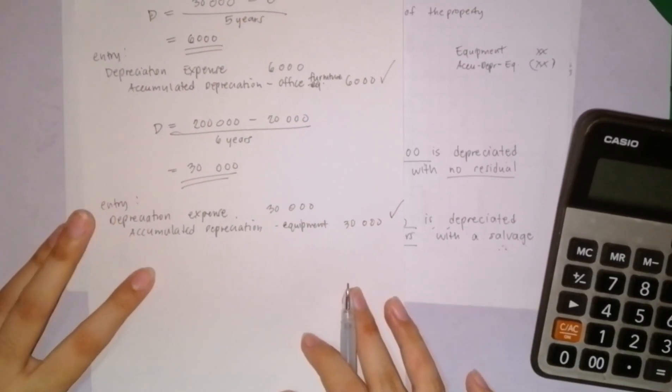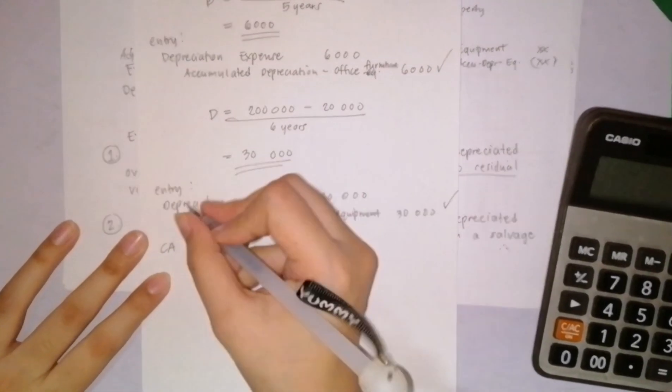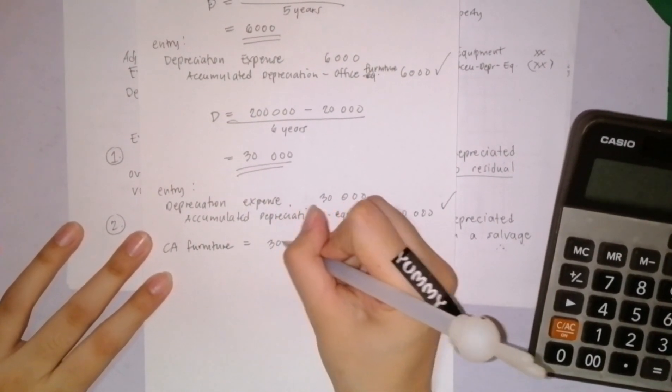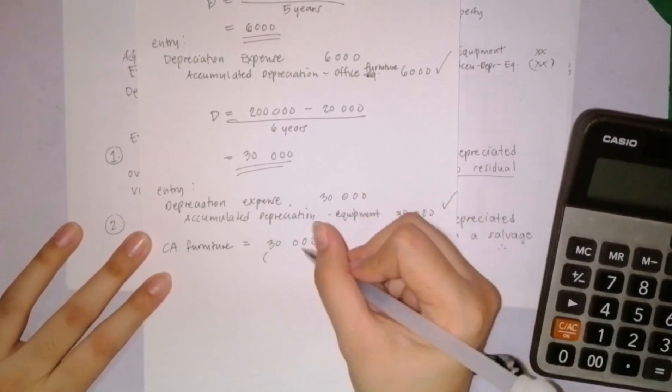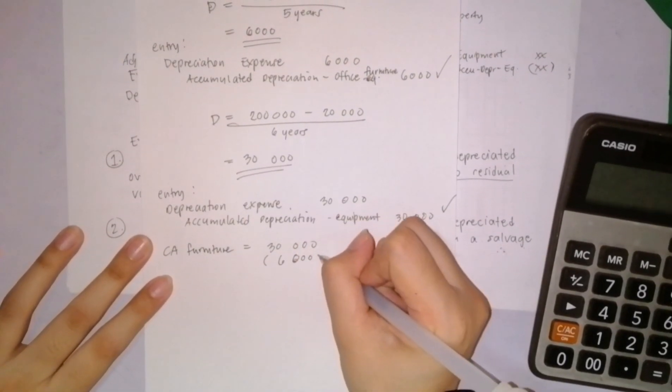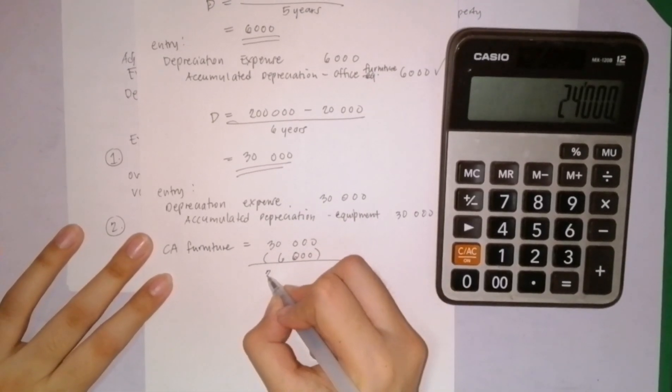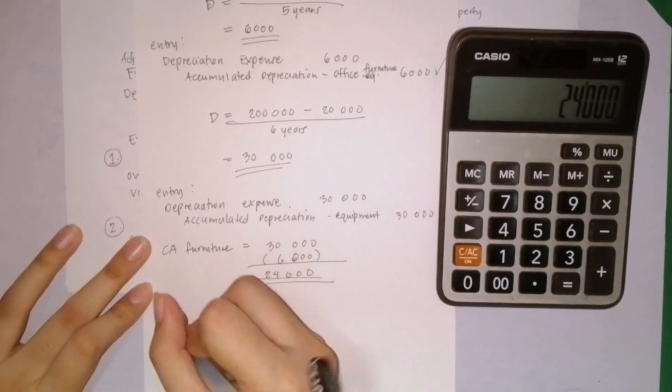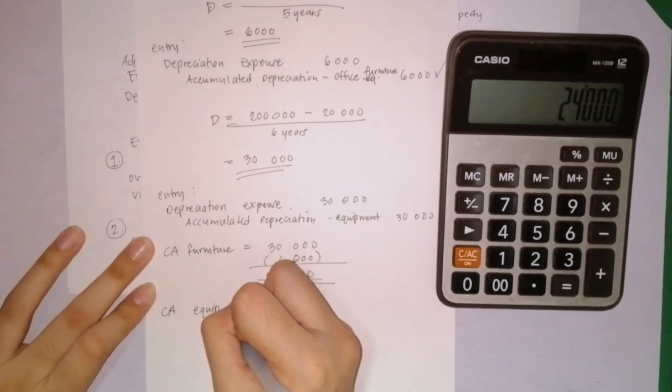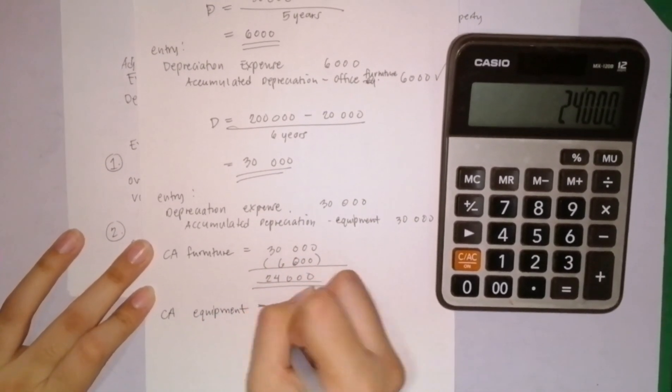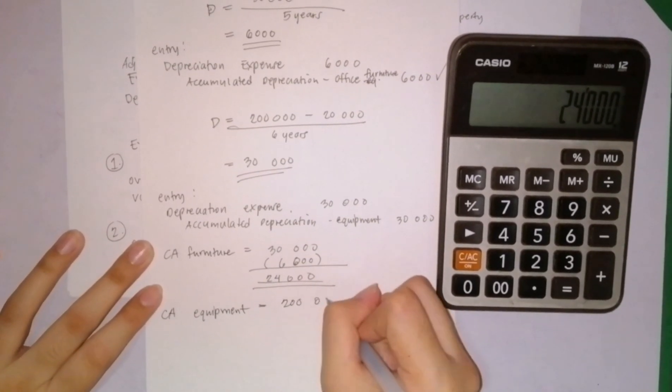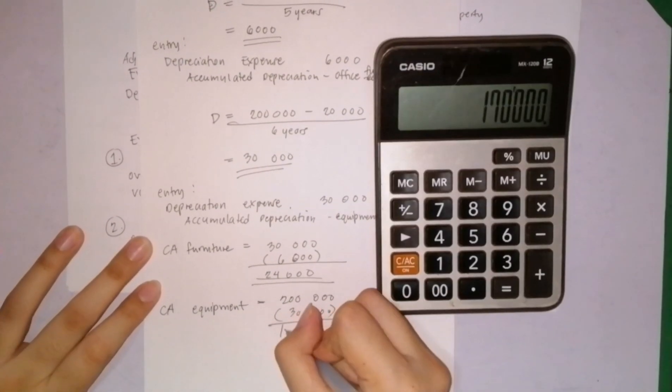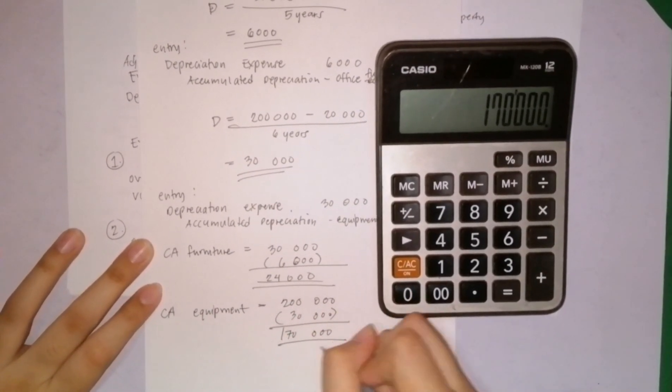At the end of the year, if asked what's the carrying amount of office furniture, we simply do this: 30,000 cost less the accumulated depreciation of 6,000, so we get 24,000 carrying amount. For the equipment, carrying amount is just cost of 200,000 less depreciation of 30,000, giving a carrying amount of 170,000.